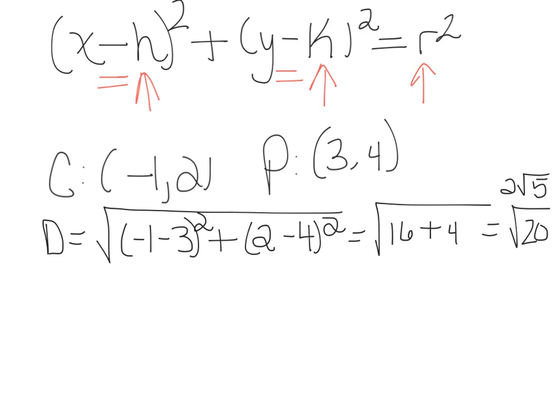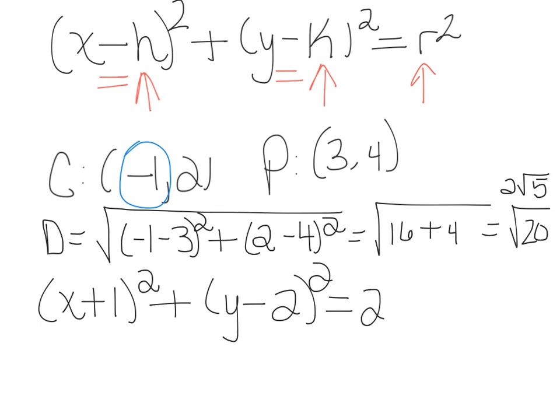So now x is going to be minus, but this negative 1 here, negative negative is going to make a positive, so x plus 1 squared plus y minus 2 squared equals my radius squared. So you can use your 2 root 5 and square it, or the square root of 20 squared is simply 20.